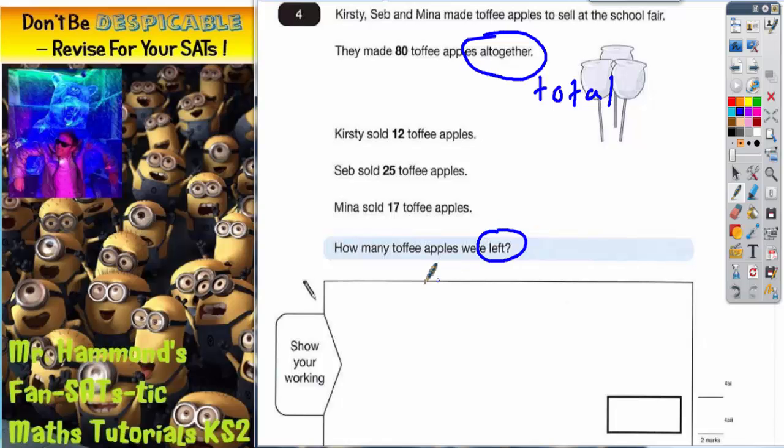Well, the first thing we've got to do is find out how many they actually sold. So we're going to do this using an addition column method. So 12, add 25, add 17. Make sure the numbers are lined up in the correct columns.